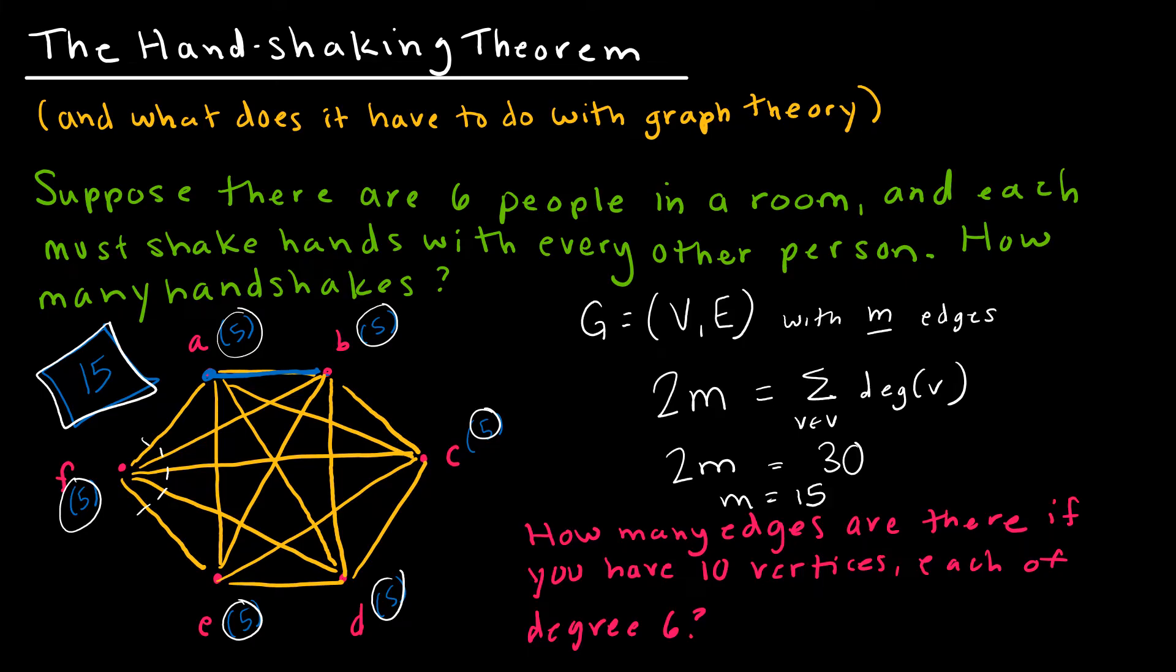Same thing now if I gave you another question. Instead of having to draw the graph and count things up, we can just use this relationship. How many edges are there if you have 10 vertices each of degree 6? So again, I have to think about what do I know. I have 10 vertices each of degree 6. So over here I had 6 vertices each of degree 5 and that gave me that 30. So that's all I'm going to do. 10 times 6 is 60. How many edges must I have? I must have 30 edges.